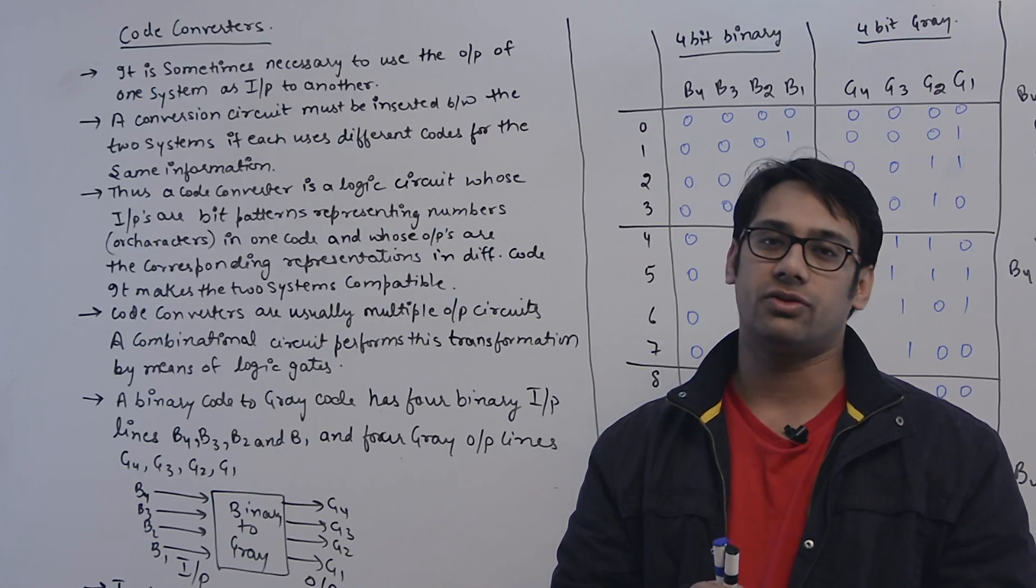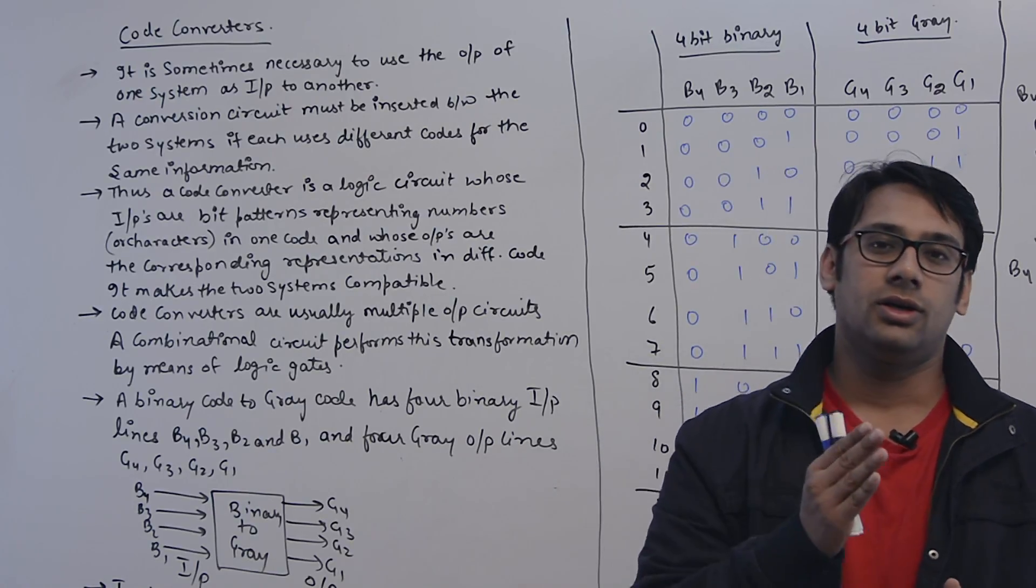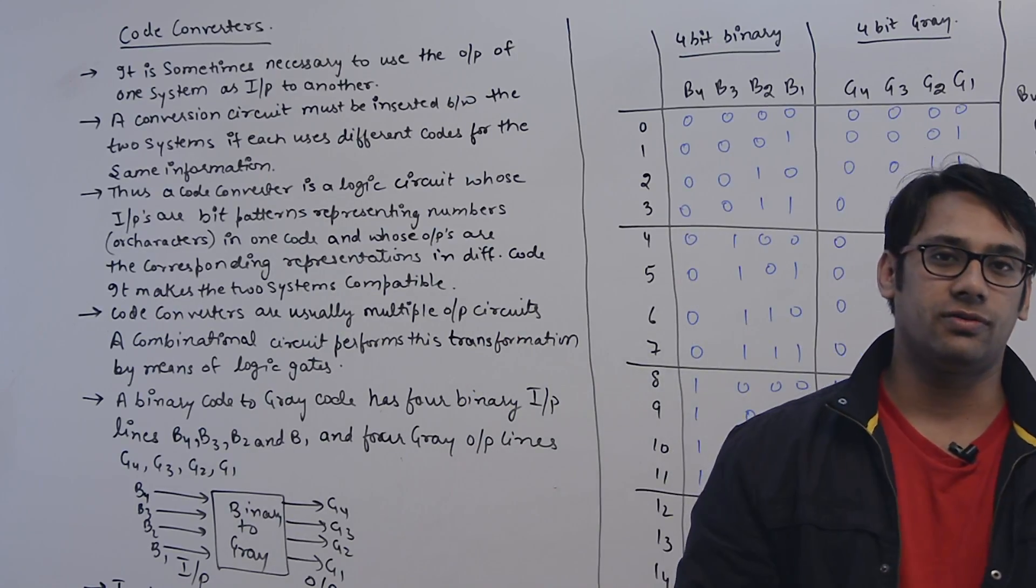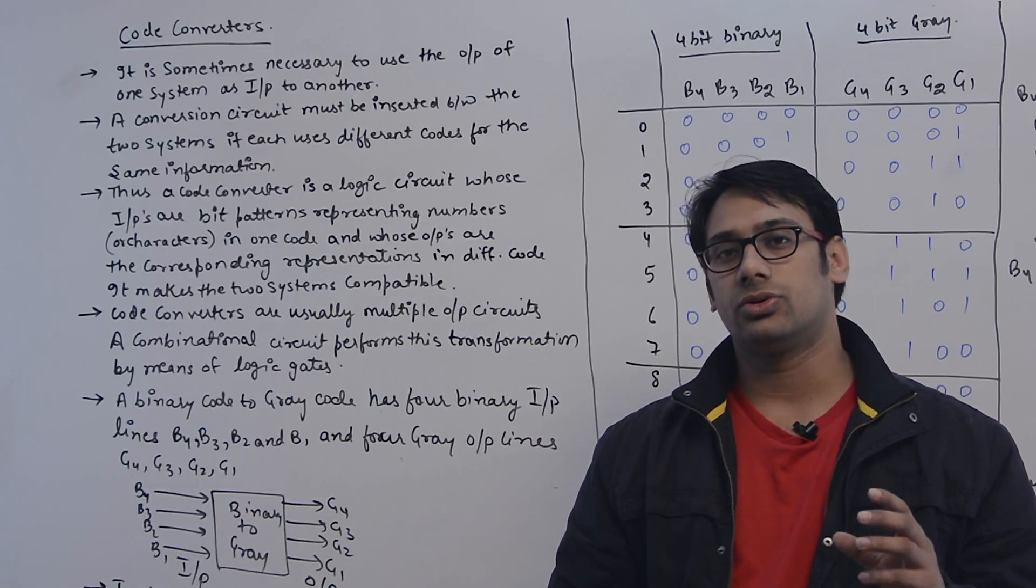In the same way, if you have a binary code then you want to convert this binary code to gray code, then also you can create a code conversion circuit. The procedure to convert the code will be pretty much the same because we are going to use the same kind of procedure.